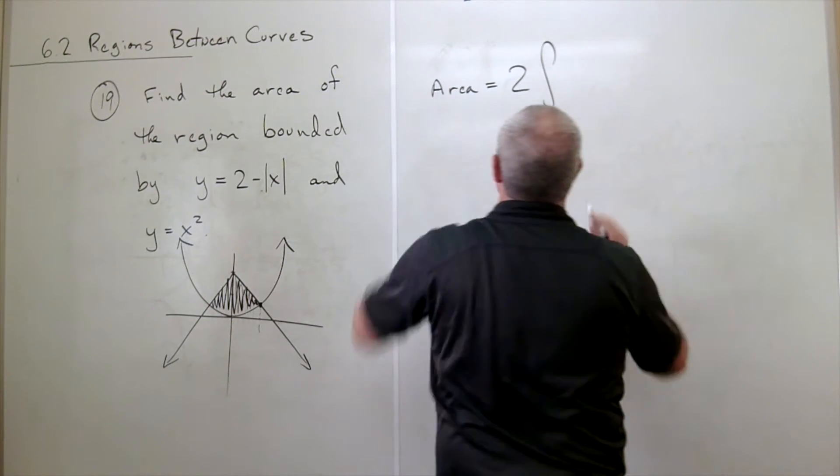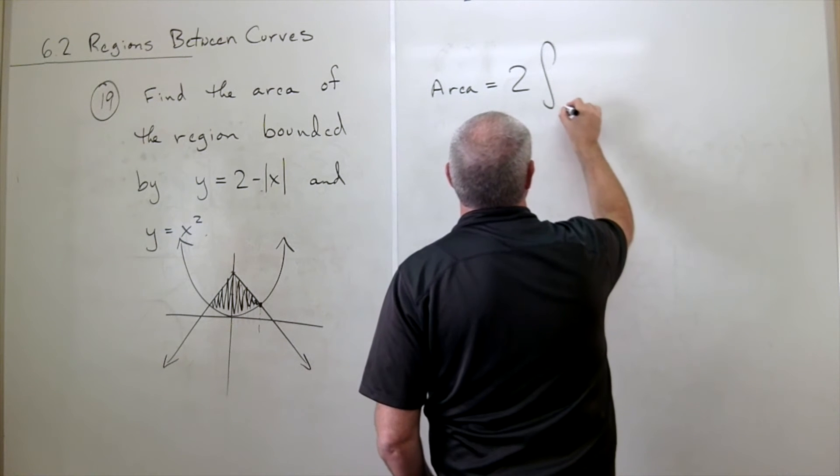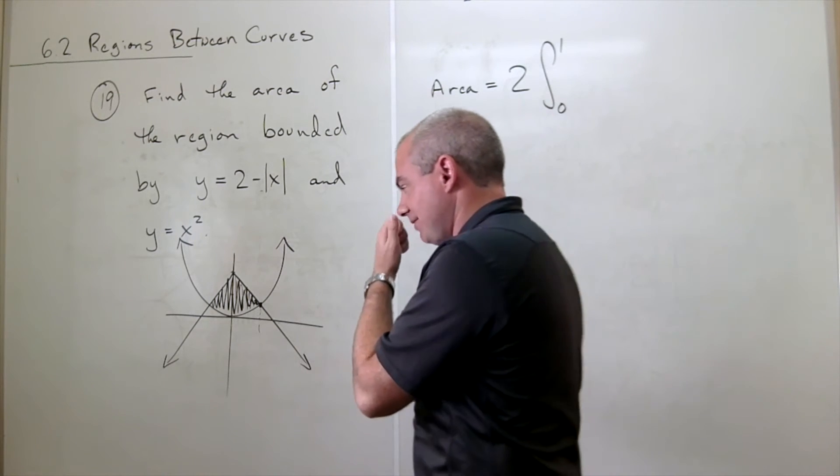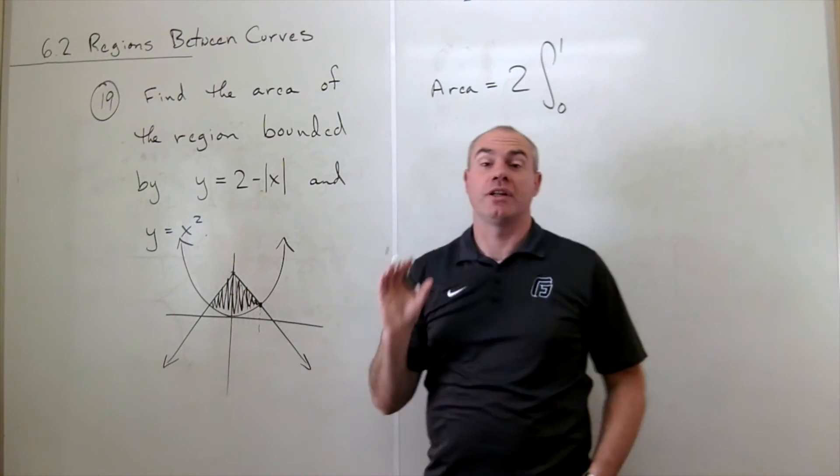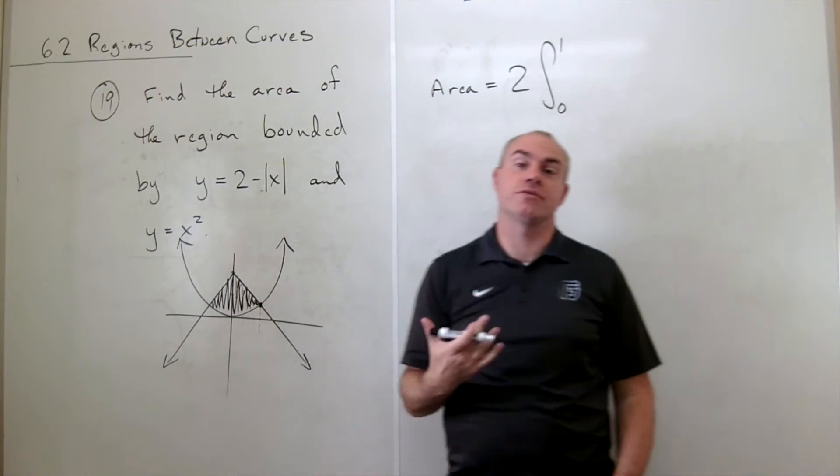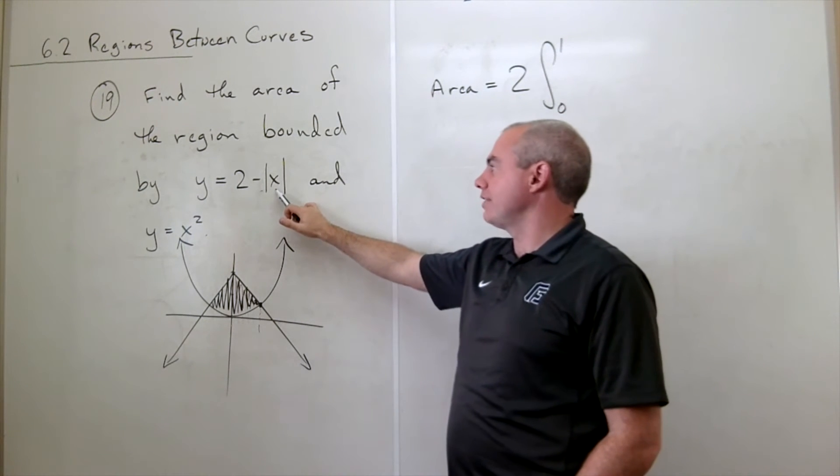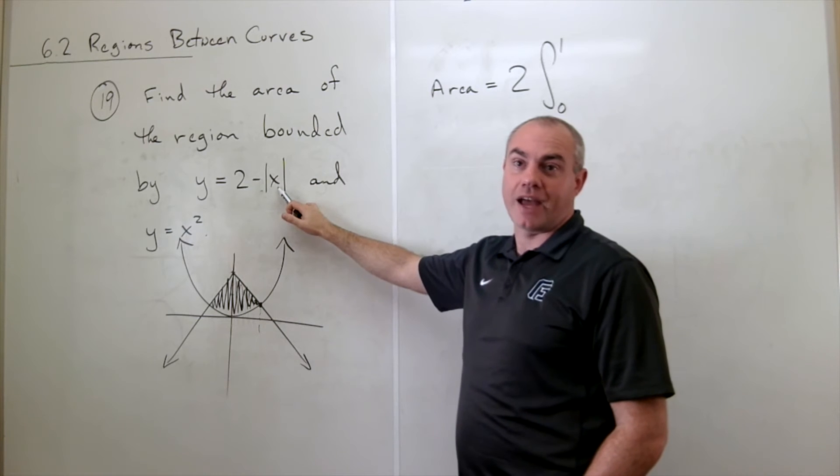So the area is going to be two times the integral from 0 to 1 of the top function minus the bottom function. Now, here's a place where students can sometimes get a little bit frustrated and that is any time that they have to deal with an absolute value of x.